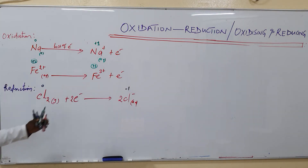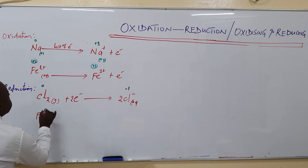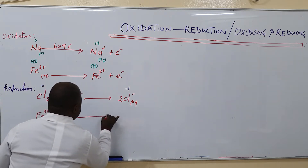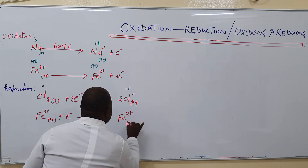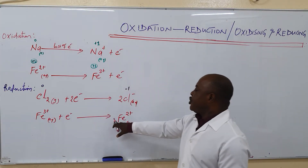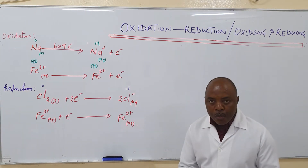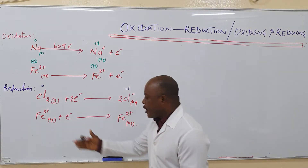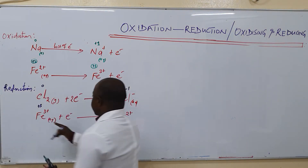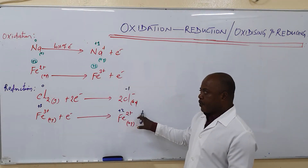Another example: take iron 3 plus again. Iron 3 gets an electron and it is reduced to plus 2. So we say it is a gain of electrons or a decrease in the oxidation number. For example, iron is plus 3, it goes to iron which is plus 2 — there is a decrease in the oxidation number from plus 3 to plus 2.